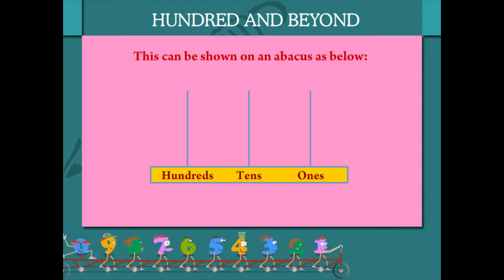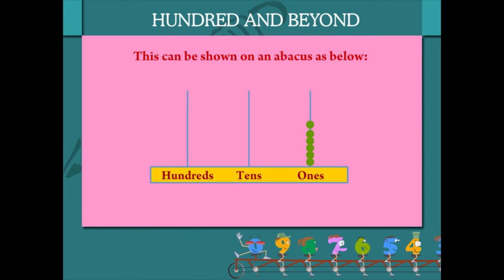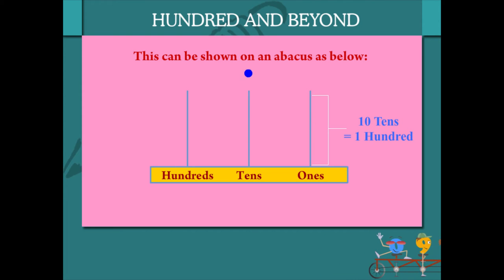10 tens and 0 ones make 100. On the abacus, fill up 10 beads of ones. 10 ones make up 1 tens. So shift the 10 ones to the tens.